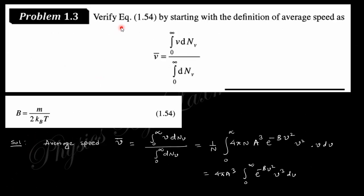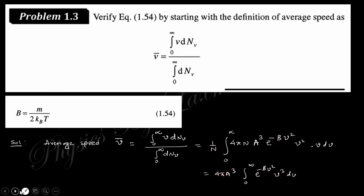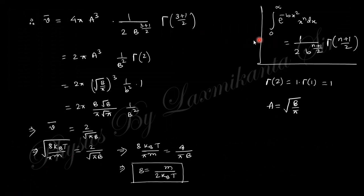The next problem says: verify equation 1.54, which states b = m / (2kbT), starting with the definition of average speed as the integral from 0 to infinity of v·dn(v) divided by the integral from 0 to infinity of dn(v). Using the Maxwell distribution, dn(v) = 4πn·a³·e^(-bv²)·v²·dv. After canceling n, you get 4πa³ times the integral of e^(-bv²)·v³·dv.